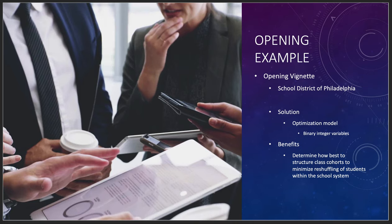We're going to take a look at the School District of Philadelphia as our opening vignette. They wanted to build an optimization model to determine how best to structure class cohorts and minimize reshuffling of students within the school system. Once you've started with a group of students, you want to end with that same group, while minimizing disruption to their social connections.